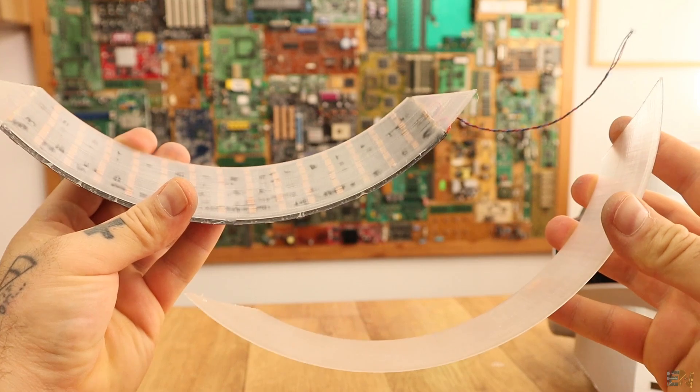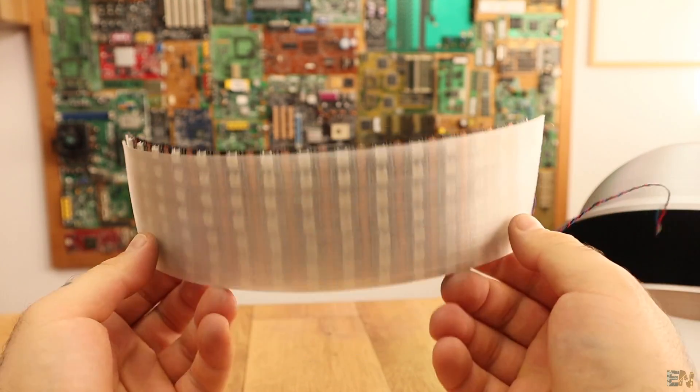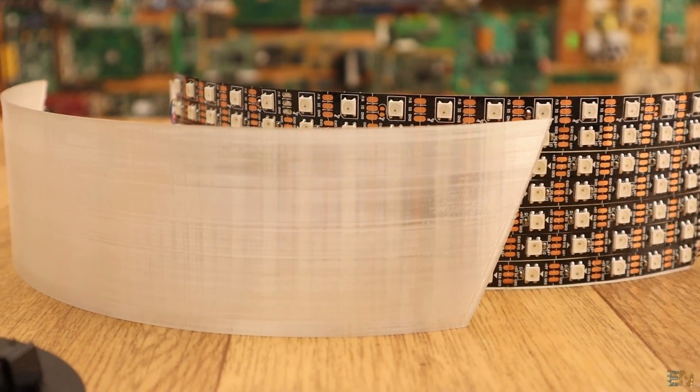First of all, I've printed two visors. One to place the LEDs on and the other one to be on top of the LEDs. But you should do this only with transparent PLA filament.